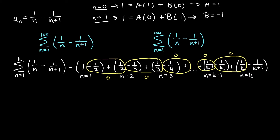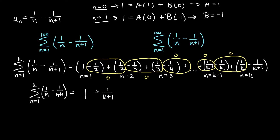This sum actually becomes 1 minus 1 over k plus 1 — everything reduces except for the very first term (1) and the very last term (minus 1 over k plus 1). That is our sum of the first k terms of 1 over n minus 1 over n plus 1. For the partial sum of the first 100 terms, k equals 100, so the sum is 1 minus 1 over 100 plus 1, which gives 1 minus 1 over 101.